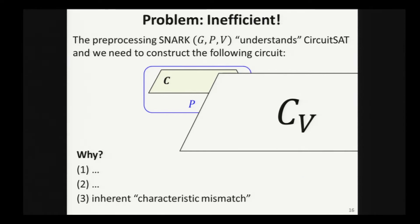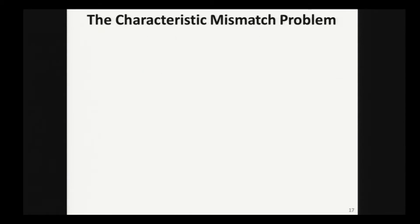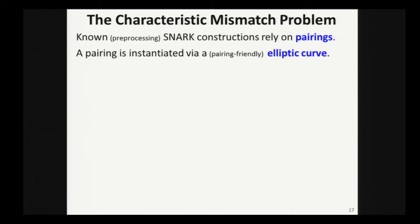So there's a number of reasons that actually cause this to be the case, but I want to focus on one particular one that is easiest to talk about here. It's something that I'd like to call a characteristic mismatch, and the reason why I choose to focus on this particular difficulty, because this particular difficulty motivates a very interesting mathematical question. So let's explore this characteristic mismatch. So this problem arises from the following. In basically all known preprocessing SNARK constructions, we have to use pairings in the verifier. And as you know, a pairing is usually instantiated using a pairing-friendly elliptic curve.